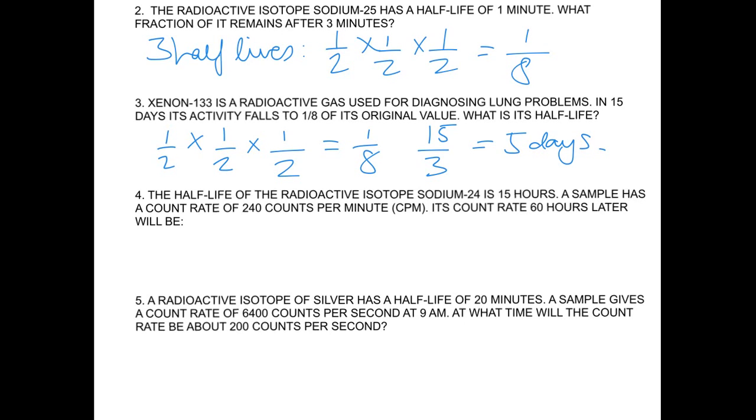Question 4: The half-life of the radioactive isotope sodium-24 is 15 hours. A sample has a count rate of 240 counts per minute. Its count rate 60 hours later will be... So this time, again, we need to find out how many half-lives have occurred.